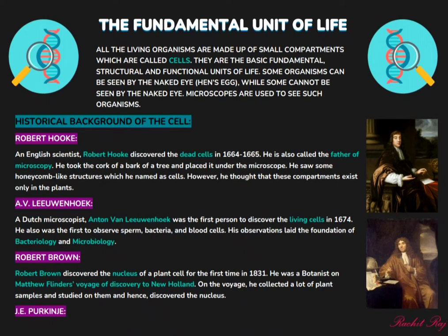Did you know that some cells can be seen by the naked eye? Yes, it's true. Cells like a hen's and an ostrich's egg can be seen by the naked eye. But many cells can't be seen by the naked eye — microscopes are used to view such cells.